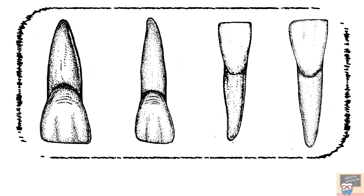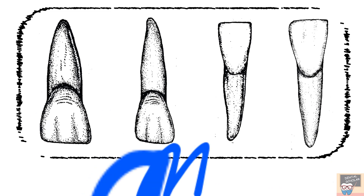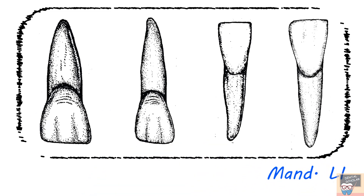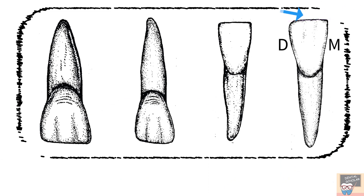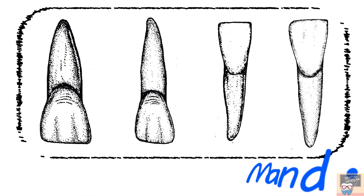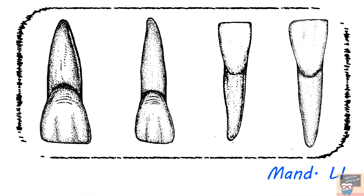Now let's compare it with the mandibular lateral incisor. The incisal margin appears to slope gingivally towards distal. The disto-incisal angle is rounder than the mesio-incisal angle. These features indicate that the tooth is a mandibular lateral incisor.